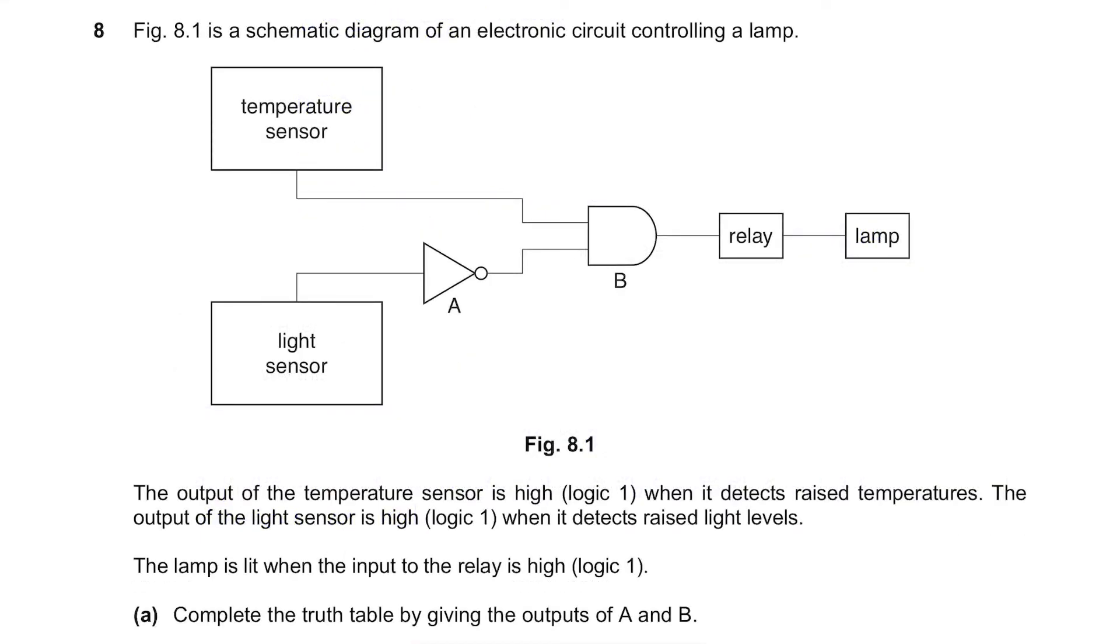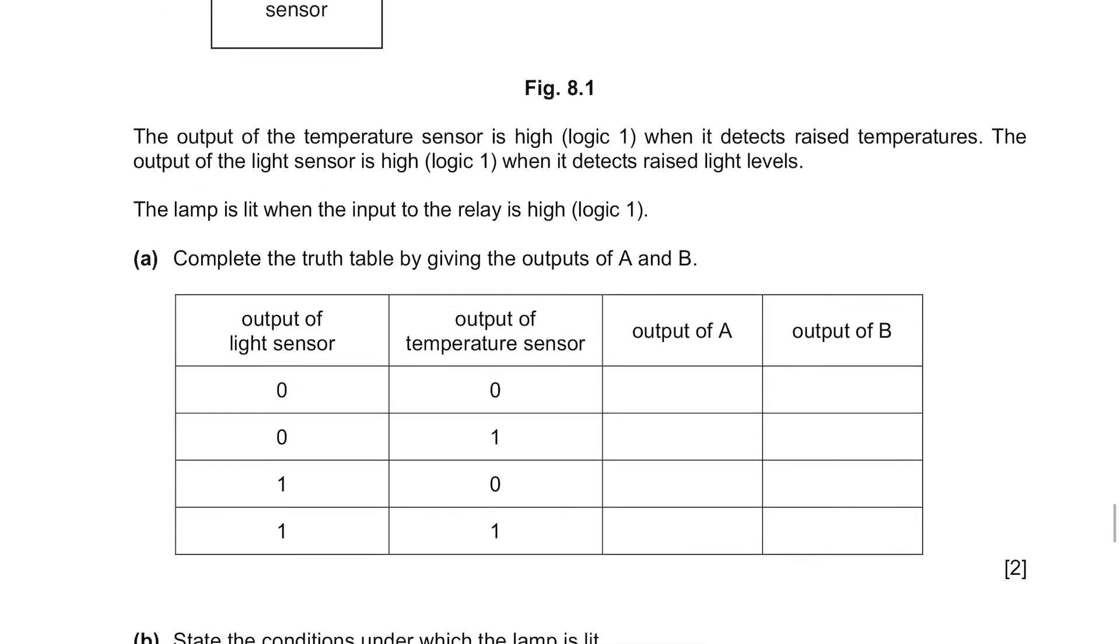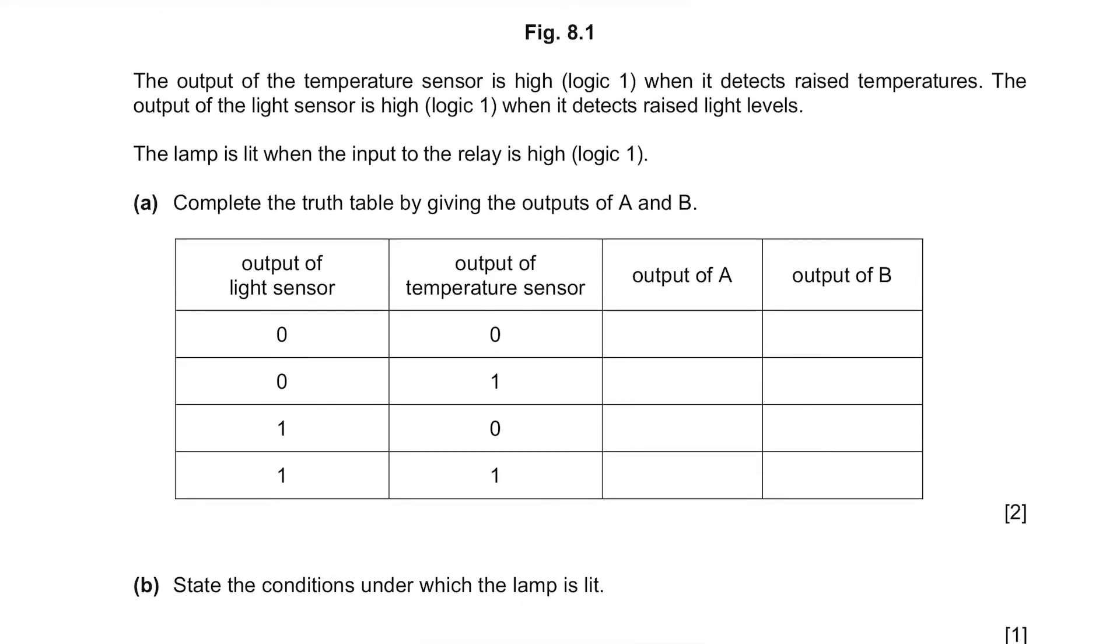Question 8. Figure 8.1 is a schematic diagram of an electronic circuit controlling a lamp. The output of the temperature sensor is high, logic 1, when it detects raised temperatures. The output of the light sensor is high, logic 1, when it detects raised light levels. The lamp is lit when the input to the relay is high, logic 1. Part A. Complete the truth table by giving the outputs of A and B.